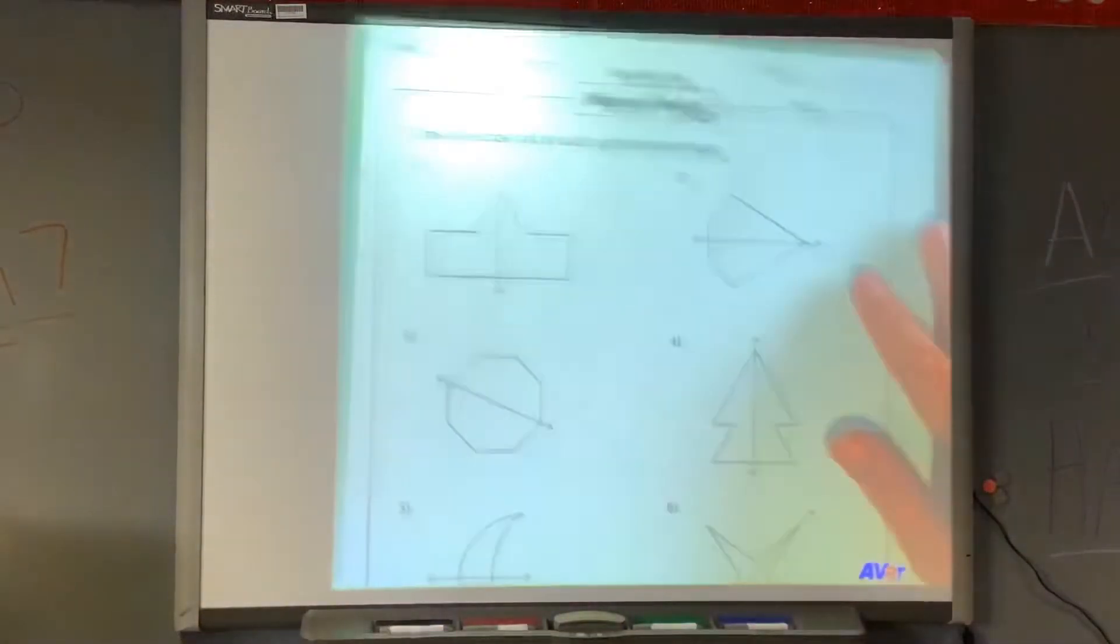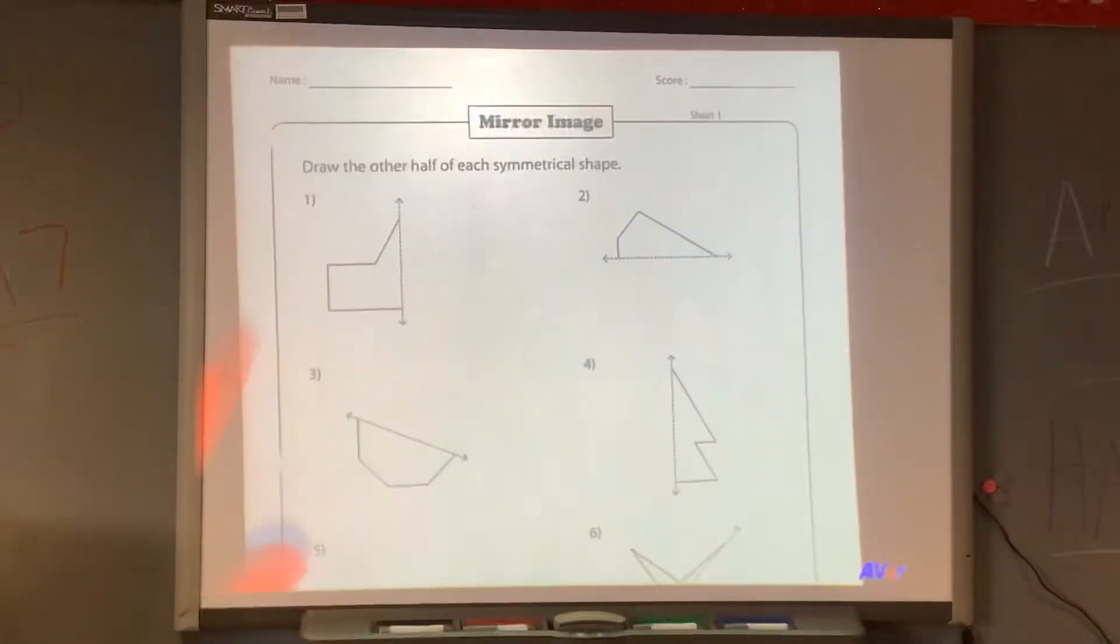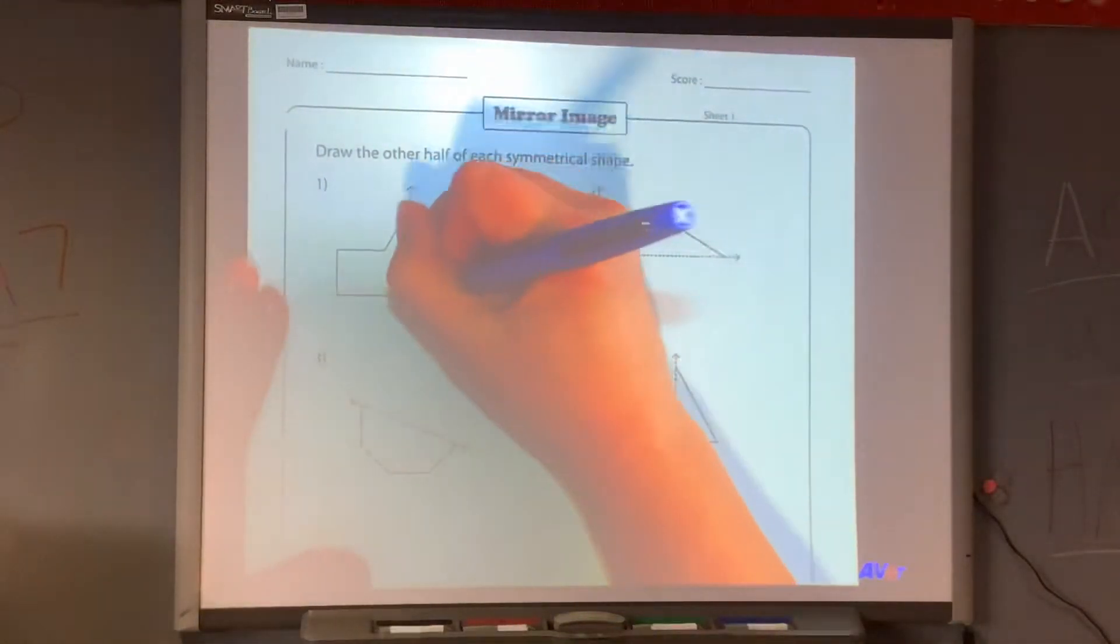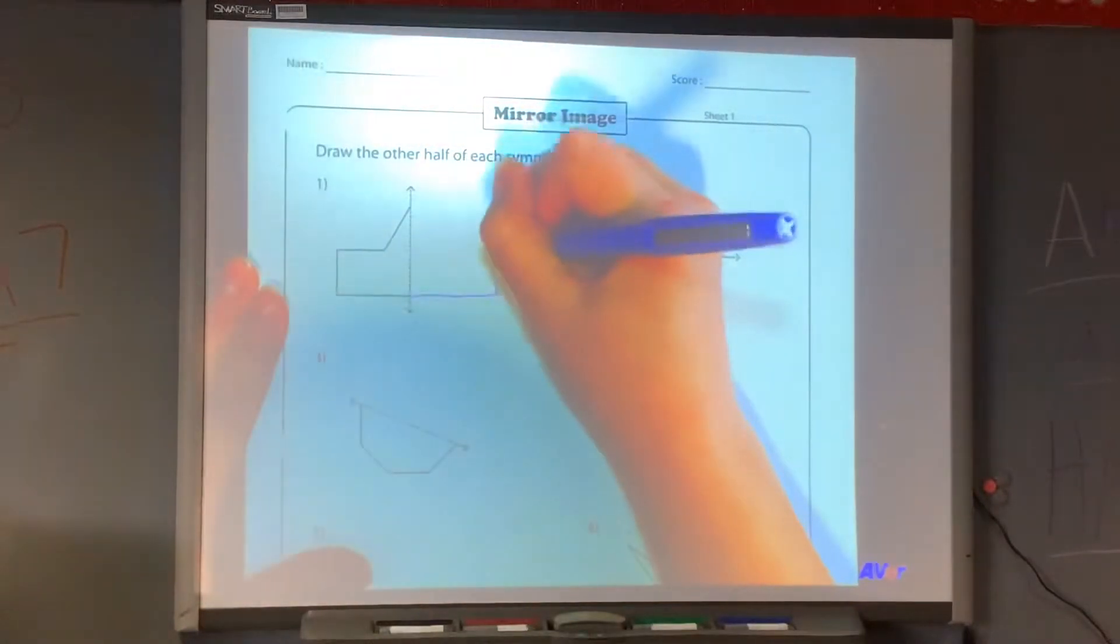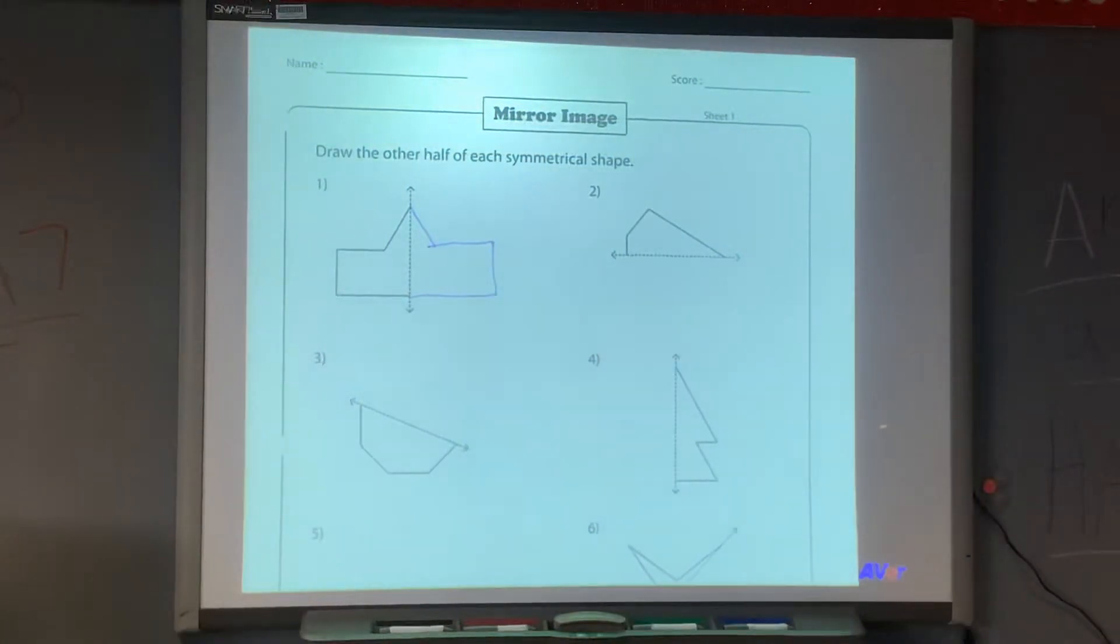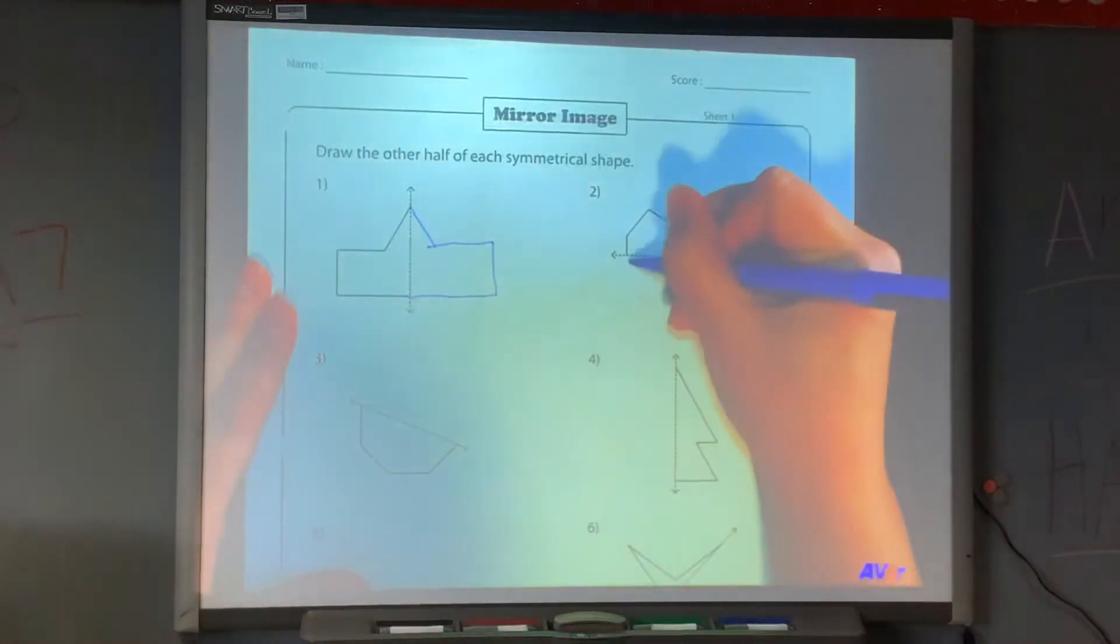A mirror reflects images to where if you put this little shape on one side of the mirror, it is going to look like the exact same thing on the other side of the mirror. And do not laugh at my drawing. But it's going to look the exact same way, just flipped.